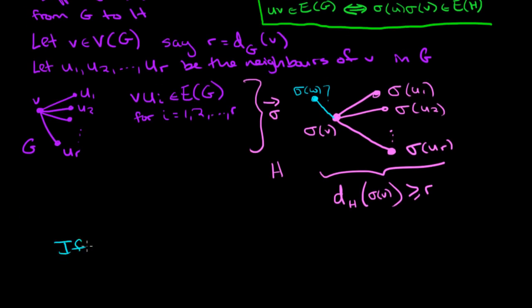Well, if there is a sigma W, which is a vertex in the graph H, with sigma V, sigma W being an edge in the graph H—that's really what this picture is showing—we want to show that this cannot happen.